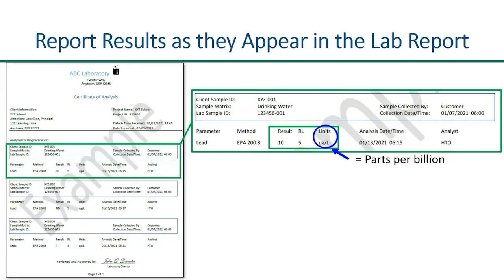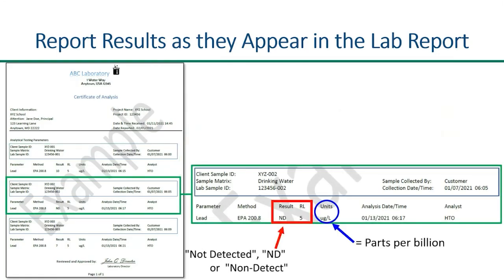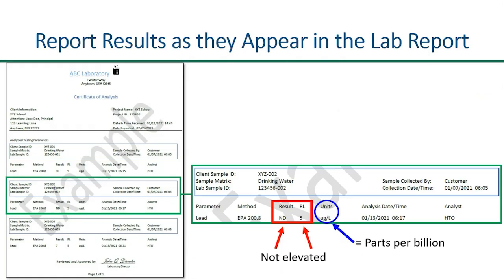Remember, ug/L is equivalent to ppb. Your lab results are typically going to be reported with decimal values and should be reported as such. If the laboratory reports a result as some variation of not detected, ND, or non-detect, this means that the lead concentration is less than the laboratory method reporting limit. This reporting limit is typically five parts per billion or less. Therefore, a result of not detected would not be considered elevated.